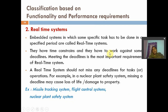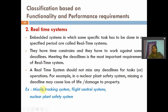Coming to second category — real-time systems. The name itself indicates that these devices depend upon time. Within the time period, they have to achieve their deadlines. A real-time system should not miss any deadlines for tasks. For example, in a nuclear plant safety system, missing a deadline may cause loss of life or damage of property. Missile tracking systems and flight control systems are examples of real-time embedded systems.